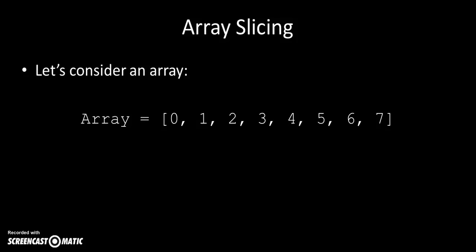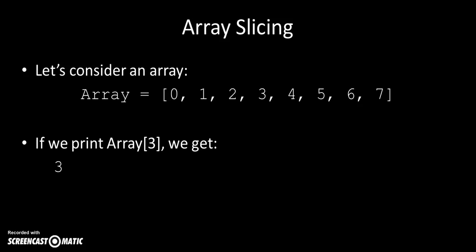If the array is 0, 1, 2, 3, 4, 5, 6, 7, which is great because it's the same as how the array is indexed, then if I print out array element 3, which is the fourth element, it will print out the number 3.